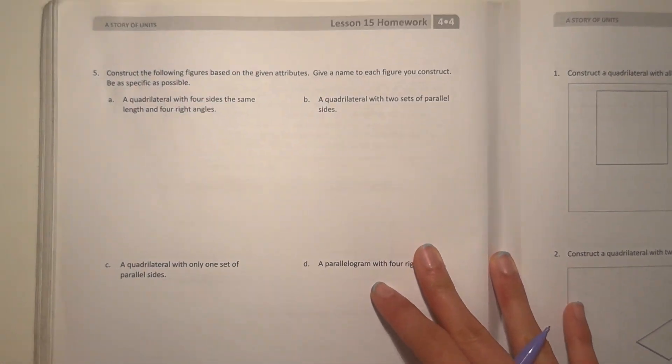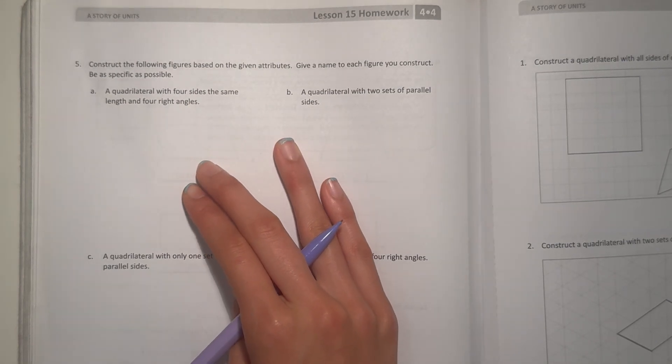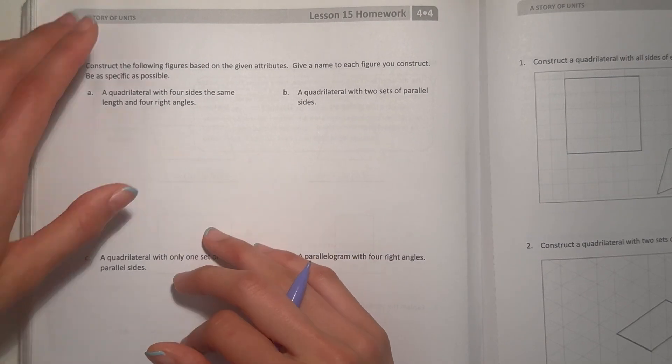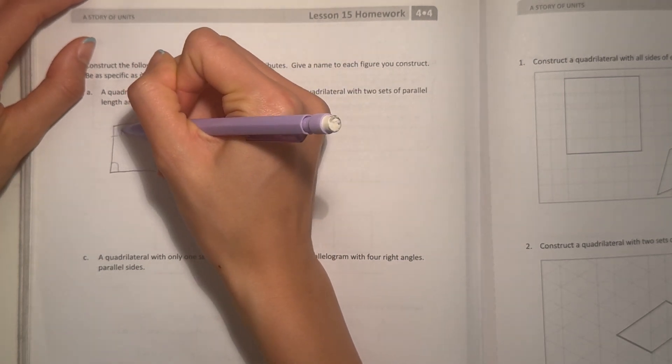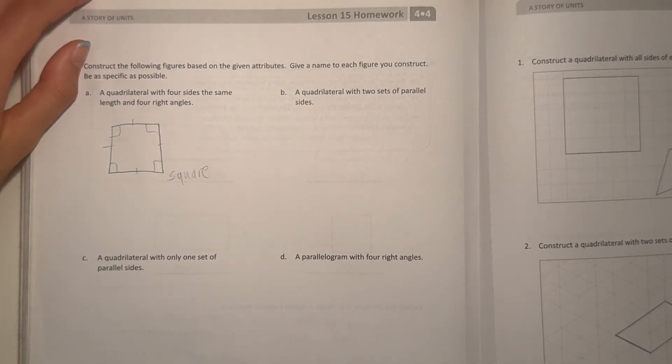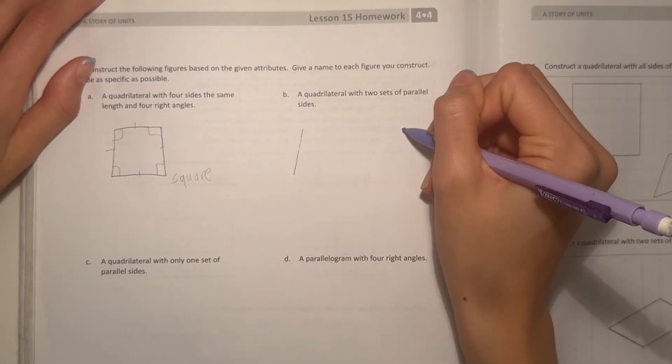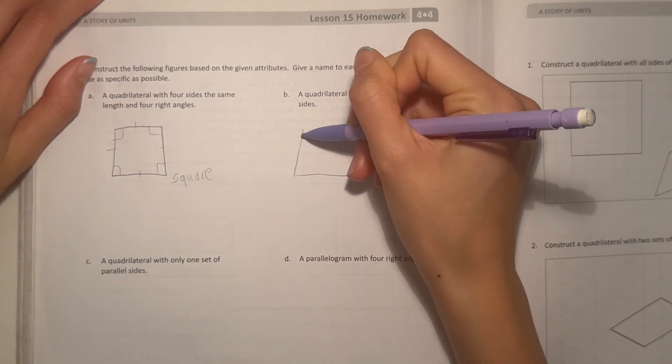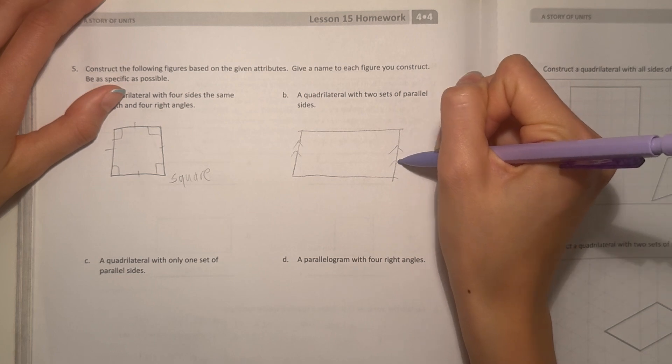Yeah okay number five, construct the following figures based on the given attributes. Give a name to each figure you construct, be as specific as possible. Alright so A, a quadrilateral with four sides the same length and four right angles, that is a square because they're all the same length and they're all right angles. They're all the same length so we can write this is a square. B, a quadrilateral with two sets of parallel sides, this could be a rectangle or a parallelogram or a square, but I think we can choose a parallelogram. Alright so they are parallel to one another. Parallelogram.